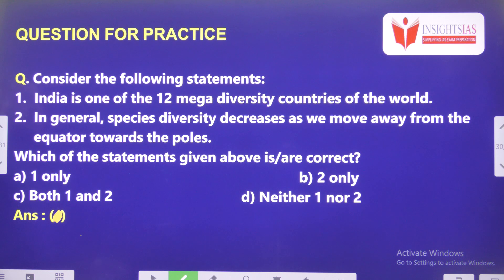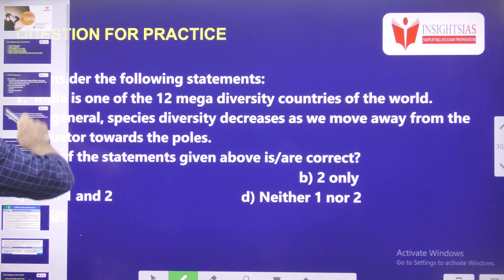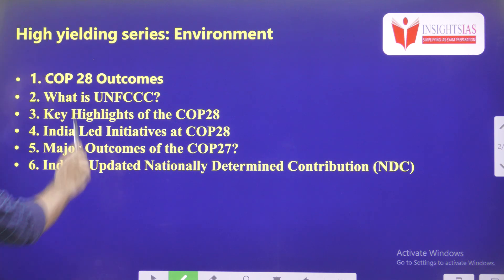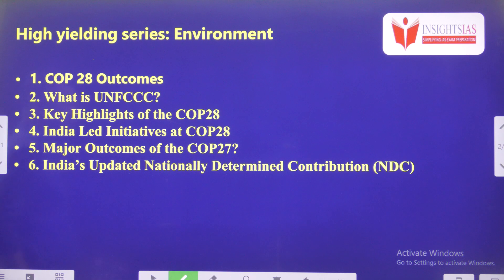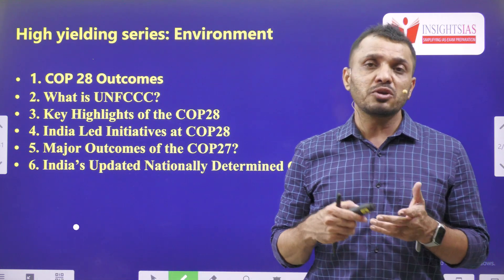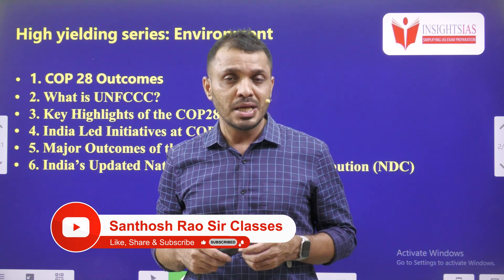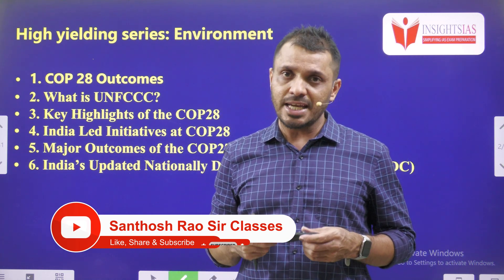Consider the following statements: First, India is one of the 12 mega-diversity countries of the world. Second, in general, species diversity decreases as we move away from the equator towards the poles. The answer is C — both statements are correct. As we reach the end of this video, we discussed the environment as part of the UPSC Prelims High Yield Series. If you need another video on COP summits, feel free to give your opinion. Thanks for watching. Have a great day. Jai Hind.